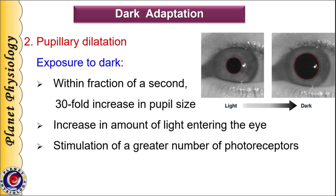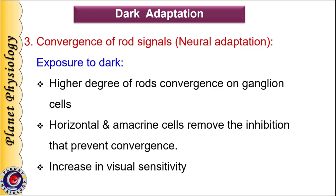The third mechanism that participates in dark adaptation is convergence of rod signals. This is neural adaptation, where during darkness more rods converge on a single ganglion cell. This change is brought about by horizontal and amacrine cells, which remove the inhibitions that prevent rod convergence, thus increasing visual sensitivity. At the same time, color perception is also reduced, and when vision becomes purely scotopic — purely dark-light vision — the person sees only in shades of grey.